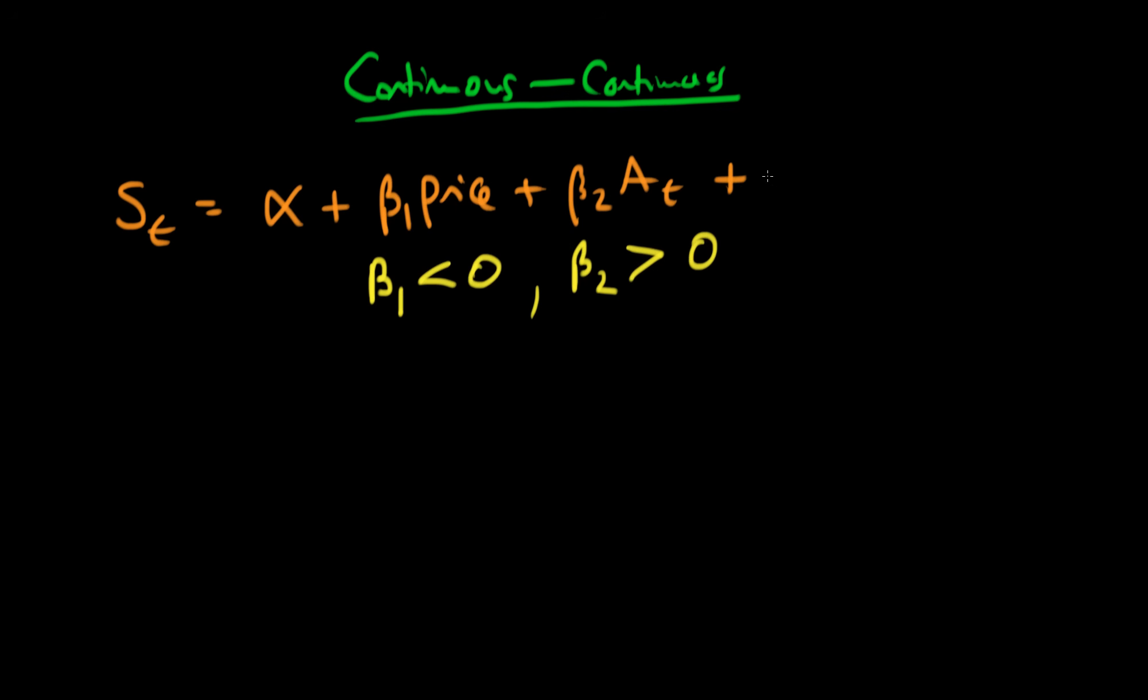But let's say we included a third term here which was beta 3, and now we included the product of price and the company's spend on advertising. What interpretation can we actually give to this beta 3?